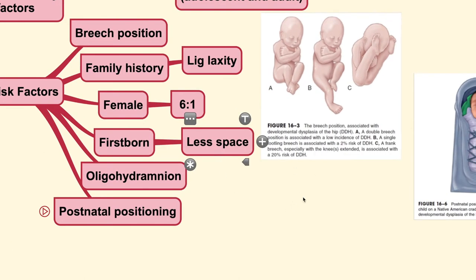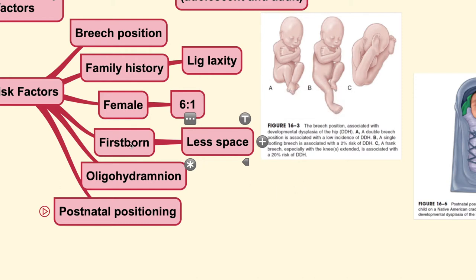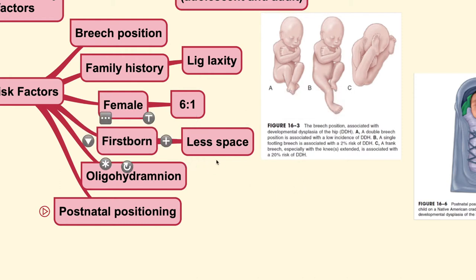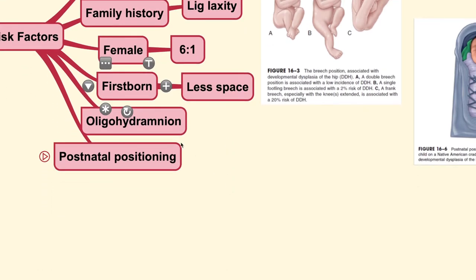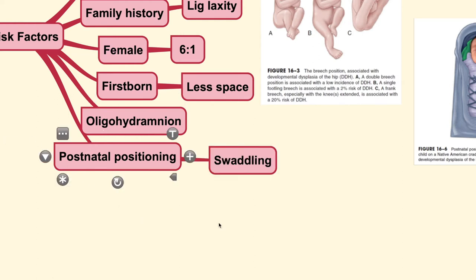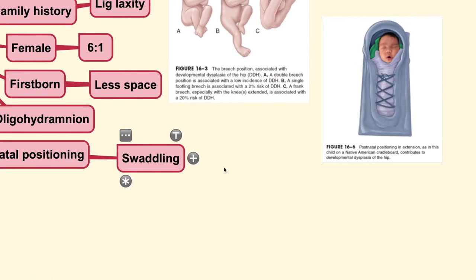DDH is usually formed in patients who are in a very small womb where they are not free to move their limbs. That is why in firstborns, where there is generally less space, DDH is very commonly found. It is also found in patients with oligohydramnios, where amniotic fluid is lacking. DDH is also associated with postnatal positioning — meaning the positioning of the patient after being born — and is highly associated with patient populations where swaddling is still practiced.